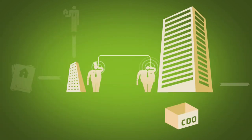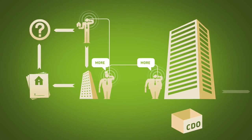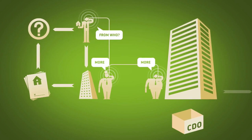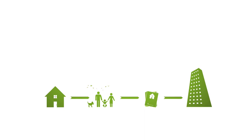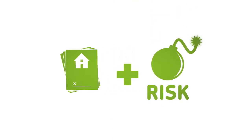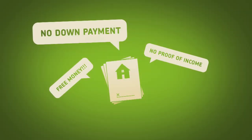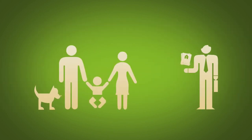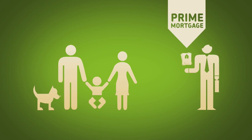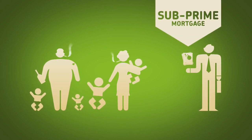So the investment banker calls up the lender wanting more mortgages, and the lender calls the broker for more homeowners, but the broker can't find anyone — everyone that qualifies for a mortgage already has one. But they have an idea: when homeowners default, the lender gets the house, and houses are always increasing in value. Since they're covered if homeowners default, lenders start adding risk to new mortgages — not requiring down payments, no proof of income, no documents at all. So instead of lending to responsible homeowners — called prime mortgages — they started issuing subprime mortgages. This is the turning point.